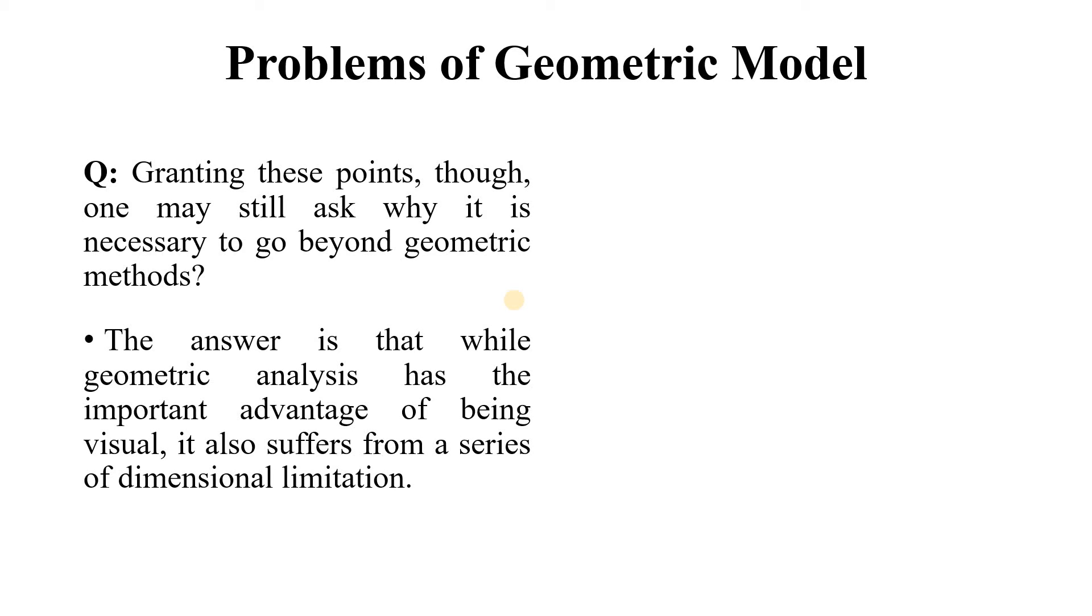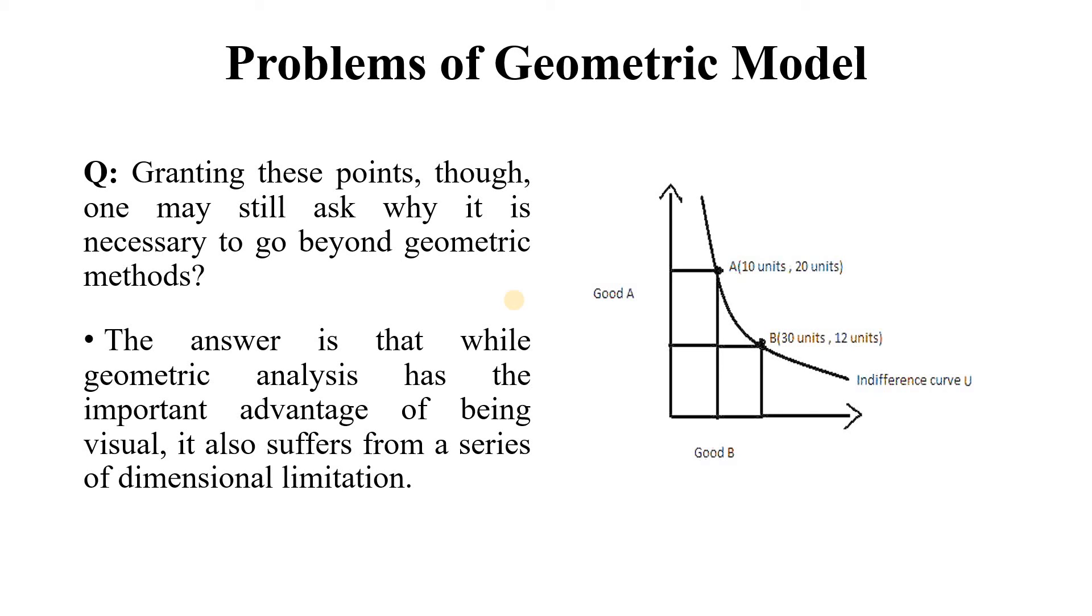For instance, indifference curves show only two commodities are available, for example good A and good B. To deal with the more general case of three, four, or m goods, we must instead resort to the more flexible tool of equations, that is mathematical models or mathematical symbols.